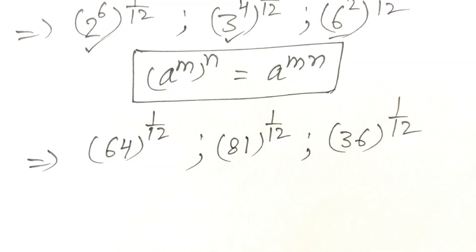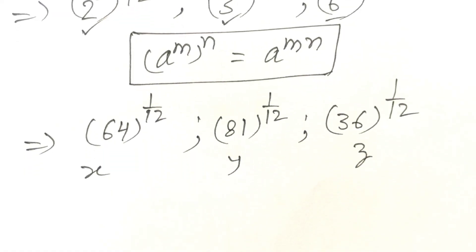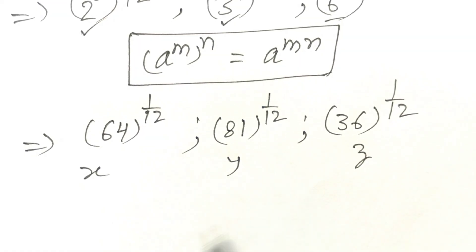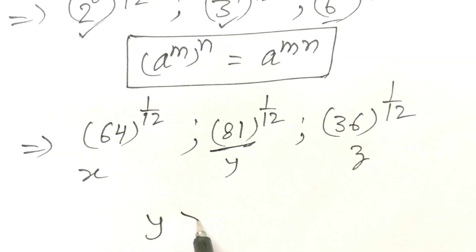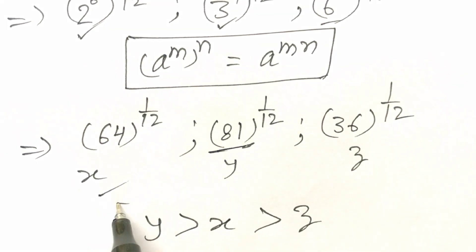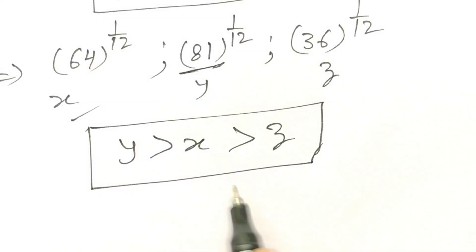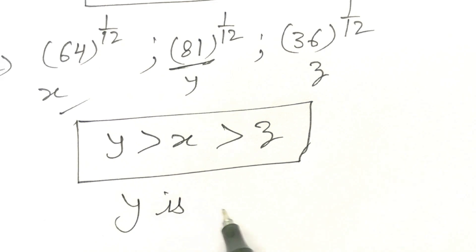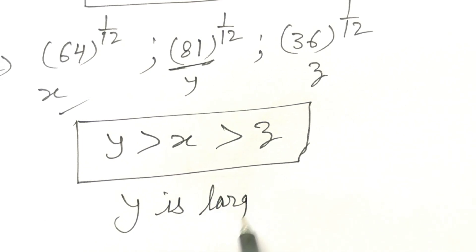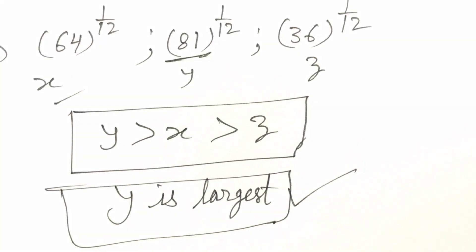Labeling these as x, y, and z respectively, since 81 is the largest base, y is the largest. We can say y is greater than x is greater than z. So we can safely say that y is largest. Okay friends, thank you.